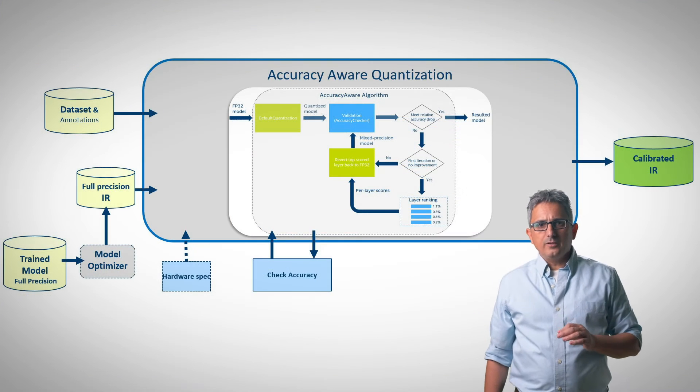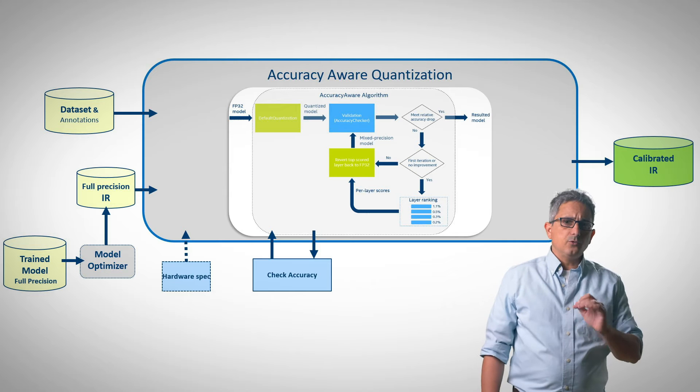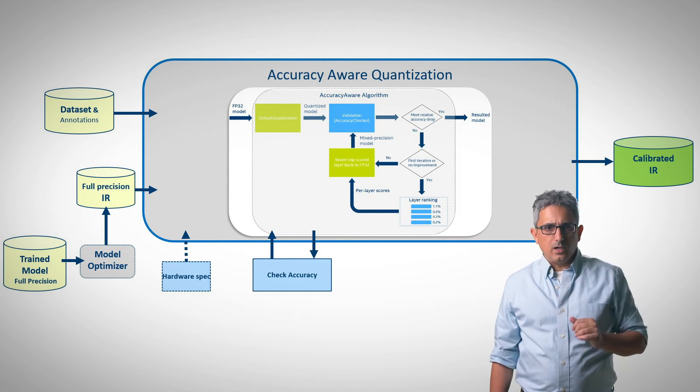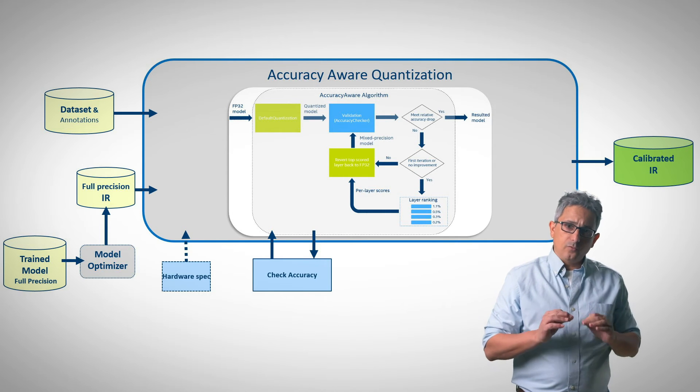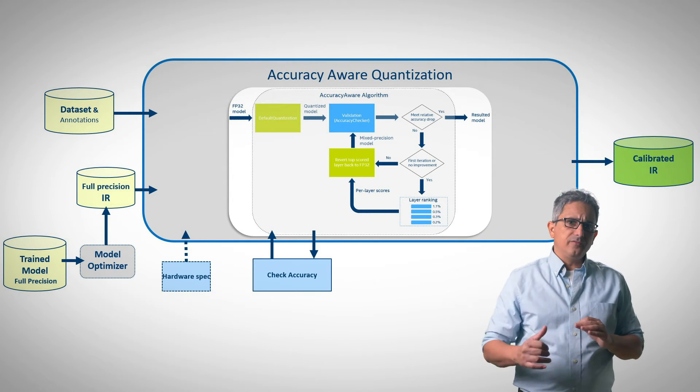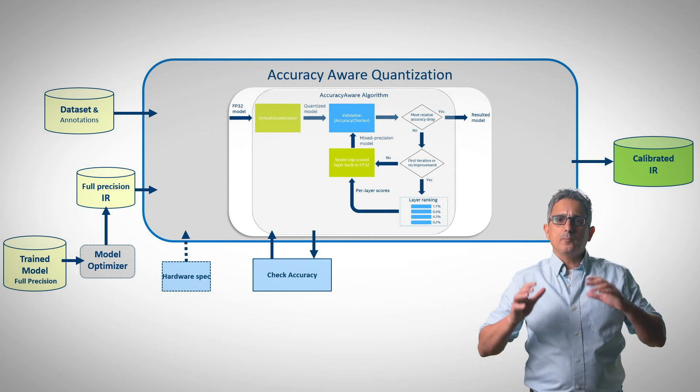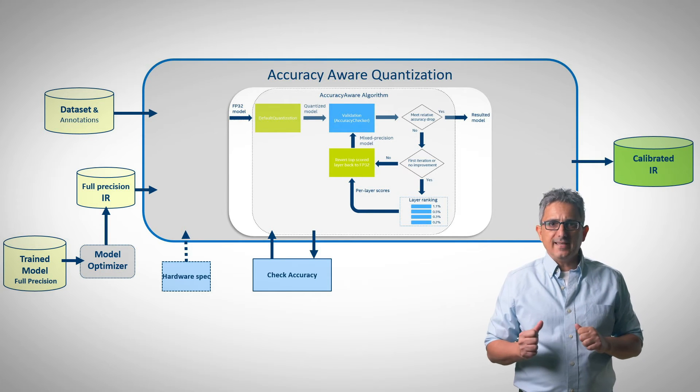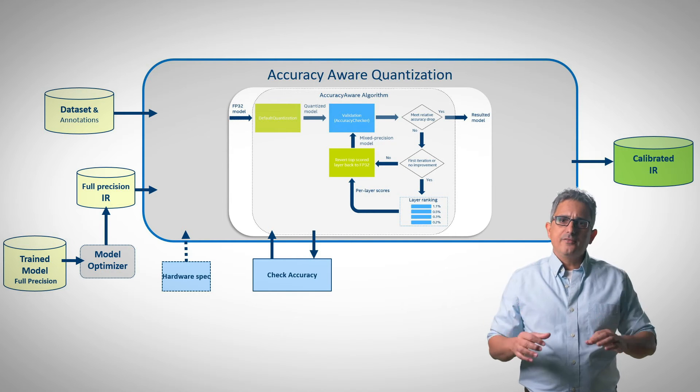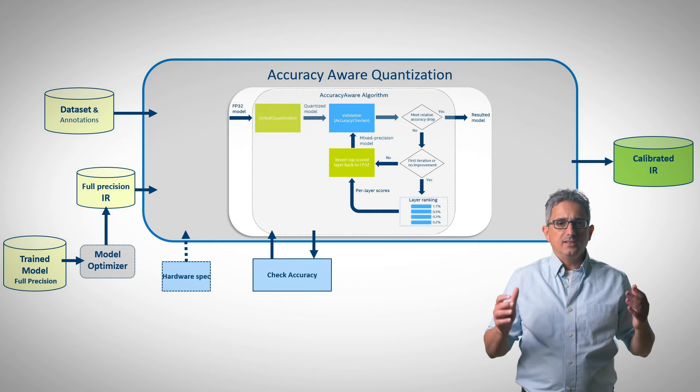The second mode is called accuracy aware quantization. Here, the algorithm will usually quantize only some of the layers, until the accuracy drop to the level you allow. It starts with running the default quantization, as in the previous mode, and then, using an iterative process, each layer of the model is ranked, based on the performance gain it can provide if converted to int 8, and the accuracy drop it can cause. At the end of the process, the optimal combination of floating point layers and quantized integer layers is set.